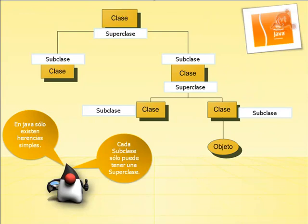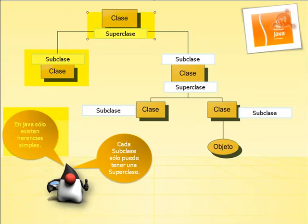Otro tema importante respecto a las herencias: la forma de herencia en Java se conoce como herencia simple, el único tipo de herencia que se puede usar en Java. Significa que las clases Java solo pueden tener una superclase, aunque cualquier superclase puede tener múltiples subclases. En otros lenguajes de programación orientados a objetos, como C++, las clases pueden tener más de una superclase y por tanto pueden heredar variables y métodos combinados de todas esas superclases; es lo que se conoce como herencia múltiple.